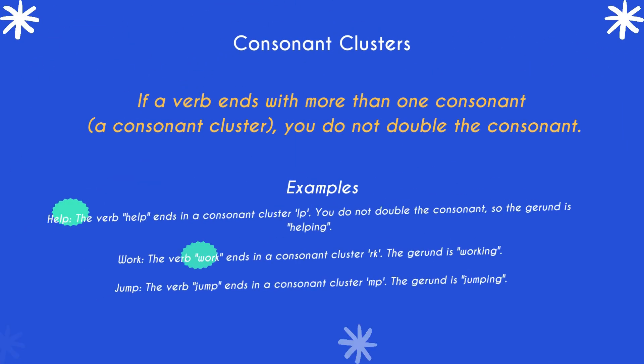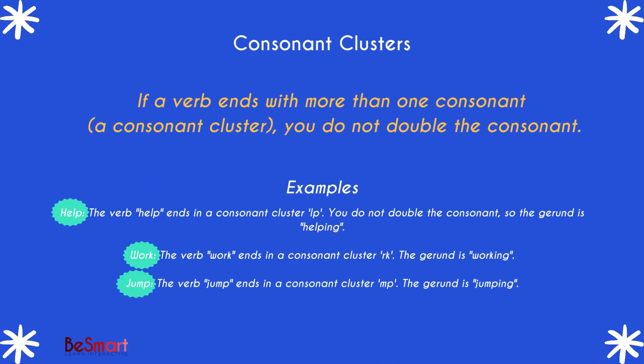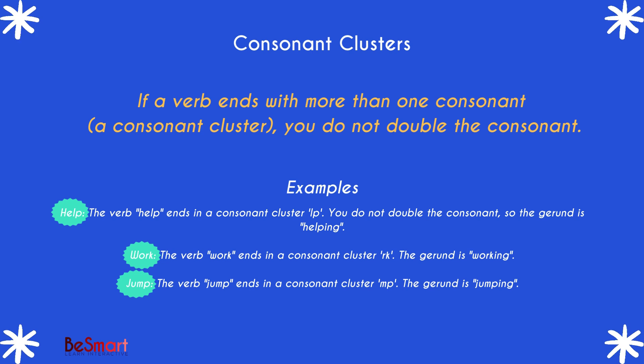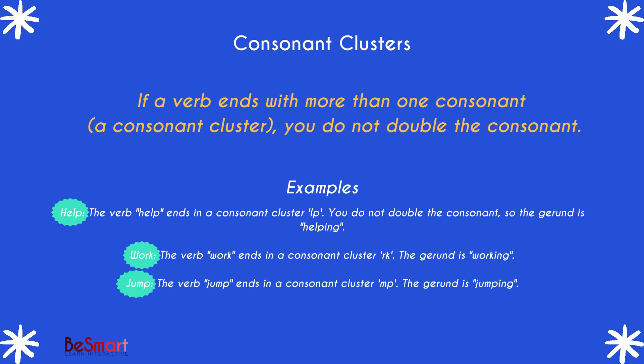Rule 3 is about consonant clusters. If a verb ends with more than one consonant, known as a consonant cluster, you do not double the consonant. Examples include help becoming helping, work becoming working, and jump becoming jumping. Since these verbs end in clusters, we simply add -ing without doubling the final consonant.